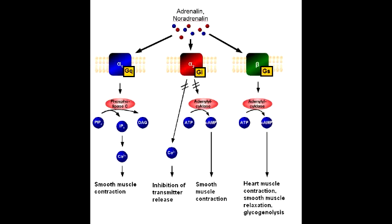The G-protein class of alpha-2 receptors is GI. The effects of alpha-2 receptor stimulation are to decrease sympathetic outflow via a negative feedback mechanism, decrease insulin release, decrease lipolysis, and increase platelet aggregation.